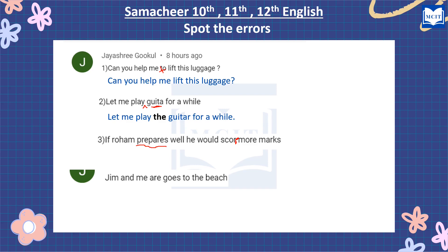The error is 'would' because 'prepares' is present tense. When the condition clause is in the present tense, the result clause should use future tense. 'Would' is the past form of 'will.' If 'prepares' (present tense) is used, then 'will' should follow — not 'would.' If it were 'prepared' (past tense), then 'would' would be correct.